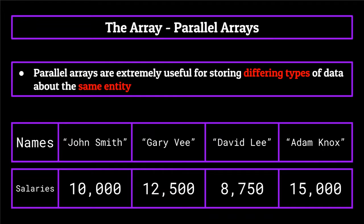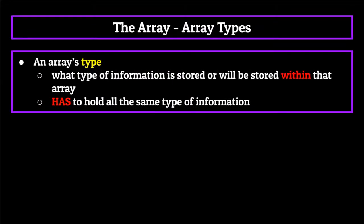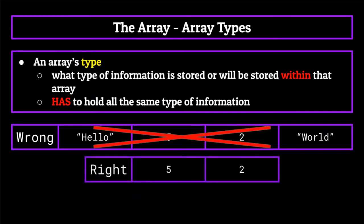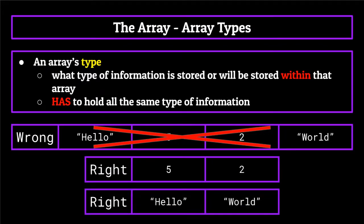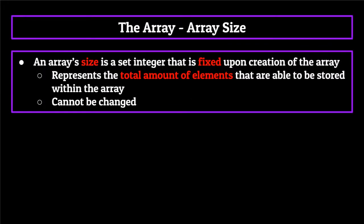The second attribute we'll be talking about is the array's type — simply what type of information is stored or will be stored within that array. One of the biggest stipulations about arrays is that it has to hold all the same type of information. You cannot have an array containing both integers and strings — it would have to be either an array of only integers or only strings. The third and final attribute that an array has is a size. This size is a set integer that is fixed upon the creation of the array, representing the total amount of elements that are able to be stored within the array. An array size cannot be changed — I'll repeat that, because it's extremely important: an array size cannot be changed once created.